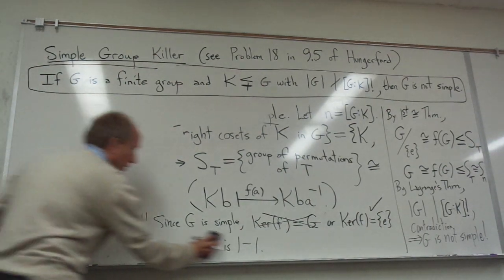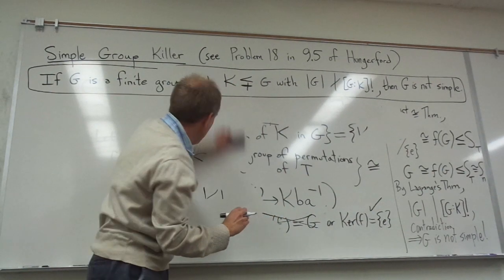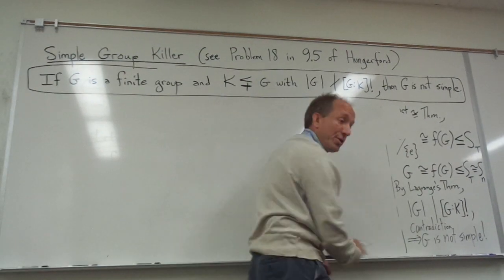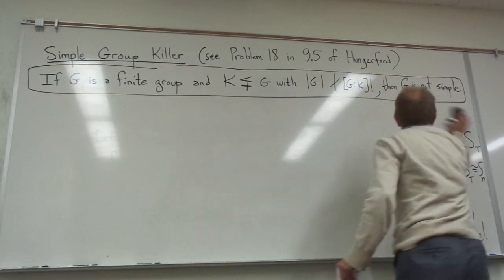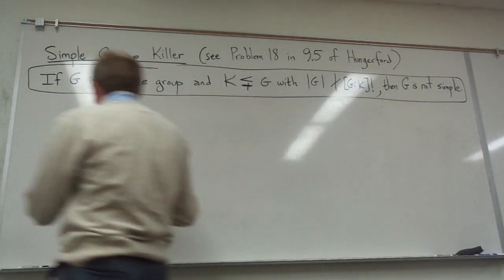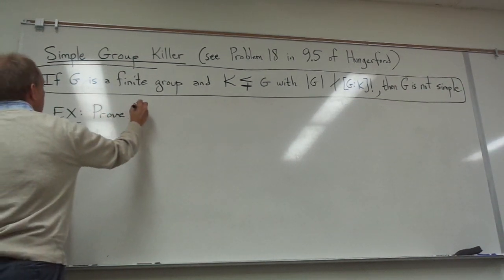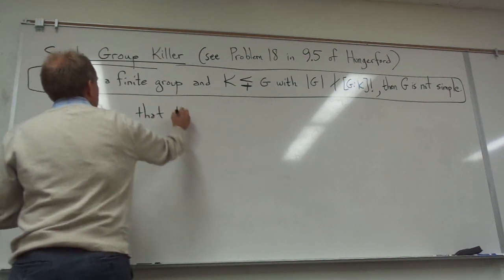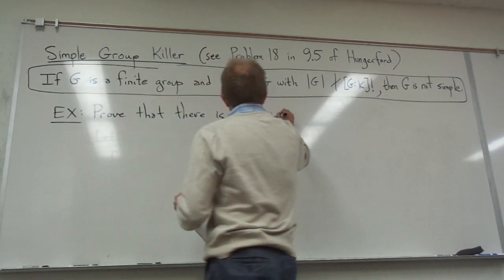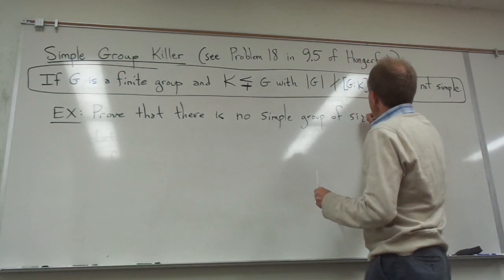So that is the simple group killer: if we have a proper subgroup of G such that the size of the group does not divide the index of the subgroup inside G factorial, then G is not simple. Let me give you one quick example of how quickly you can use it to show there are no simple groups of certain sizes. As an application: prove that there is no simple group of size 24.